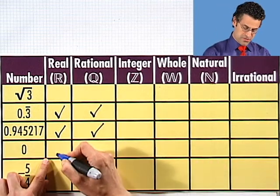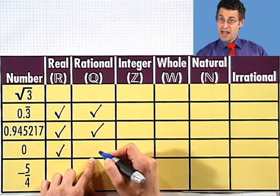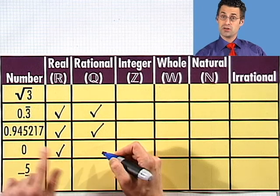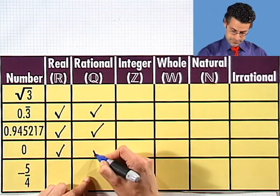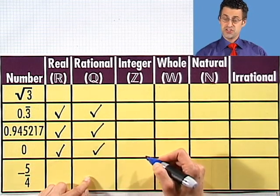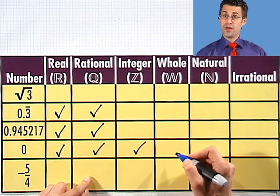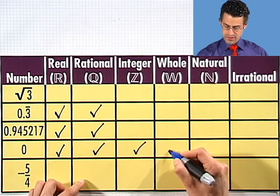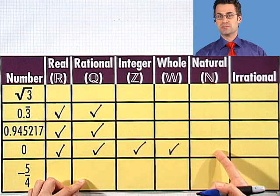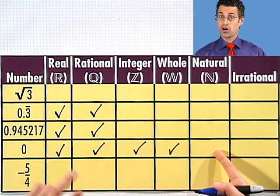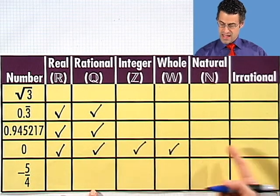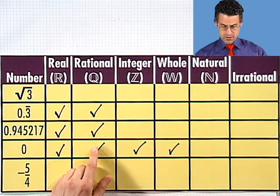0. 0 is a real number. It's a rational number because I can write it as 0 divided by 1. And is it an integer? It sure is. Is it a whole number? Yeah, it's the first whole number. But it doesn't make the cut to be a natural number because the natural numbers start at 1. So no dice there. And it's not irrational since we already know it's rational.